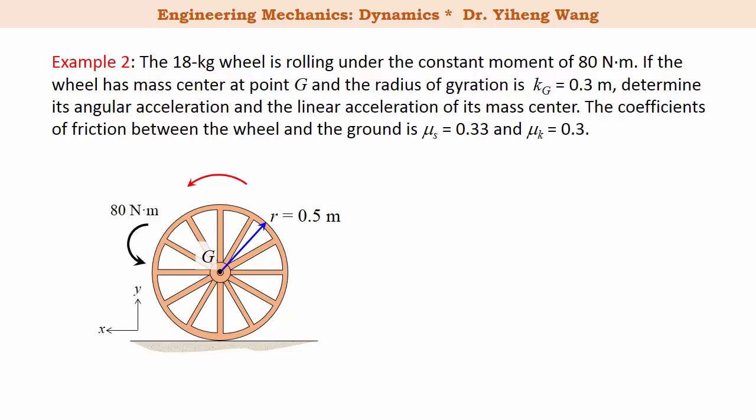Let's look at this example. When we are analyzing the general plane motion of this wheel, we need to recognize that there are two possibilities. One, this wheel is rolling without slipping. Two, the wheel is rolling and slipping at the same time. We need to do calculation and draw a conclusion which is the case — is the wheel rolling with slipping or not?